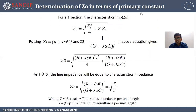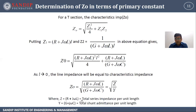Determination of Z₀ in terms of primary constants: for T-section, characteristic impedance Z₀ = √(Z₁²/4 + Z₁·Z₂). Putting Z₁ = (R + jωL)·l and Z₂ = 1/(G + jωC)·l into the equation, as l tends to 0, Z₀ = √[(R + jωL)/(G + jωC)] = √(Z/Y), where Z = R + jωL is the total series impedance per unit length and Y = G + jωC is the total shunt admittance per unit length.